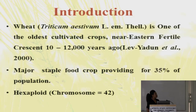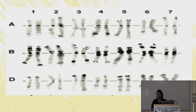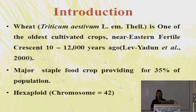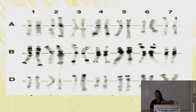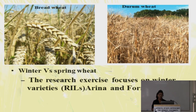I'll start with a general introduction on wheat. Wheat, or Triticum sativum, is the oldest cultivated crop, originated in the Middle East more than 10,000 to 12,000 years ago. It's a major staple crop providing about 35% of food for the population. Bread wheat is hexaploid with 42 chromosomes and three subgenomes: A, B, and D. There is bread wheat and durum wheat, with bread wheat being the major production.